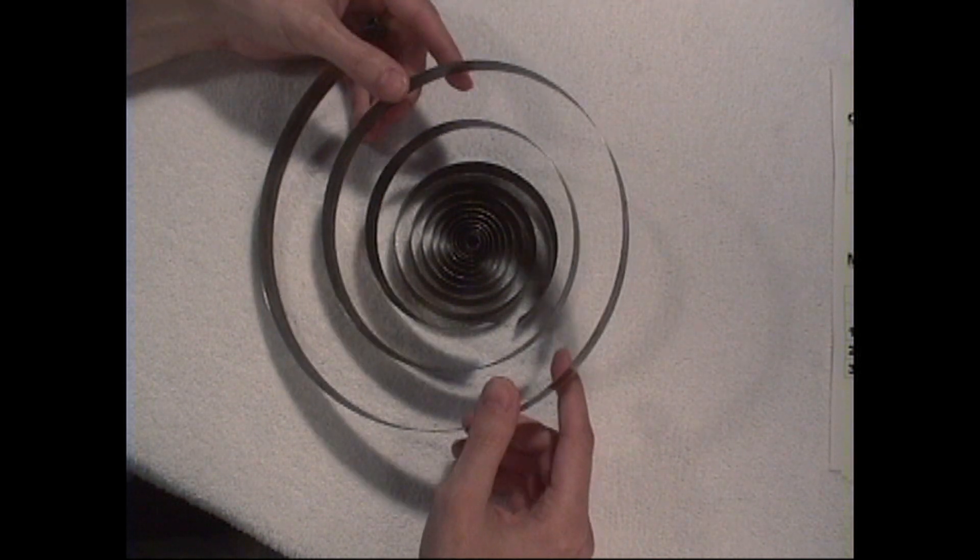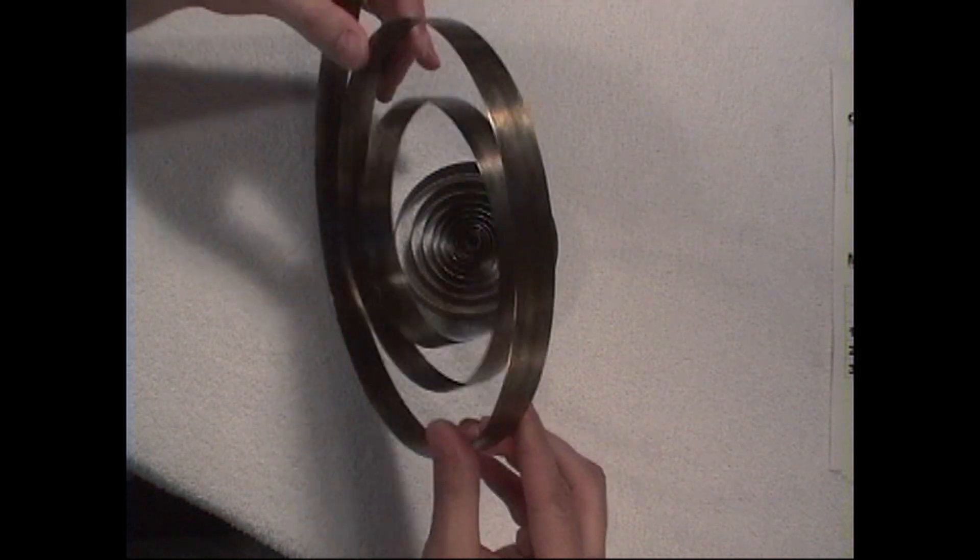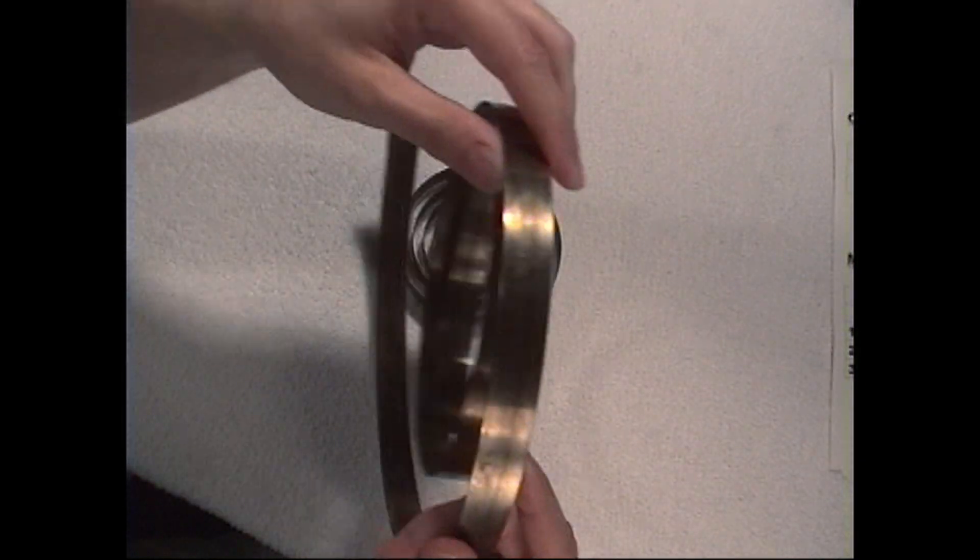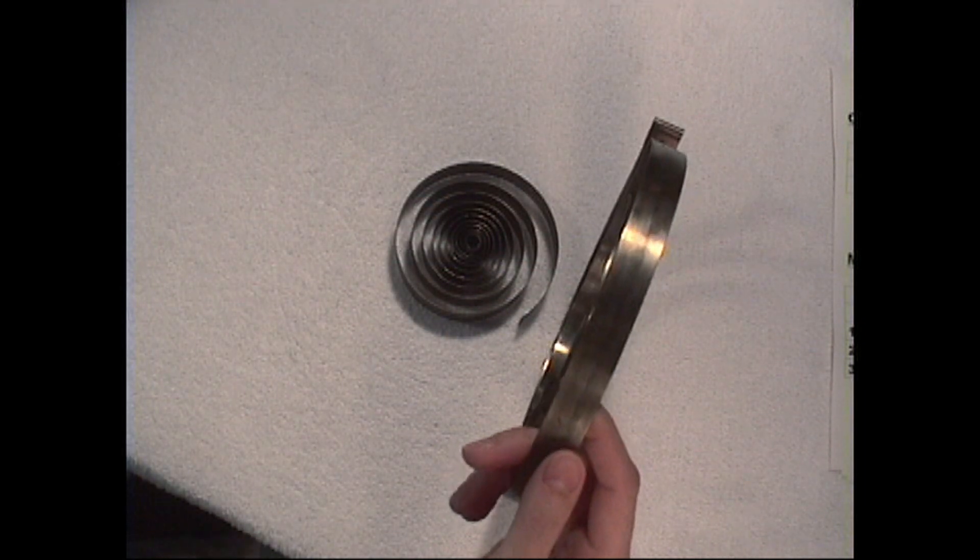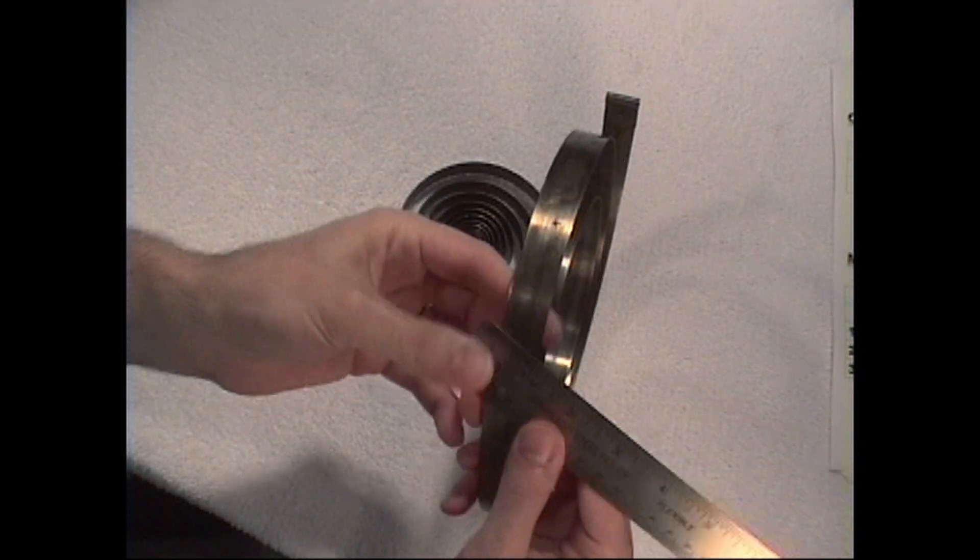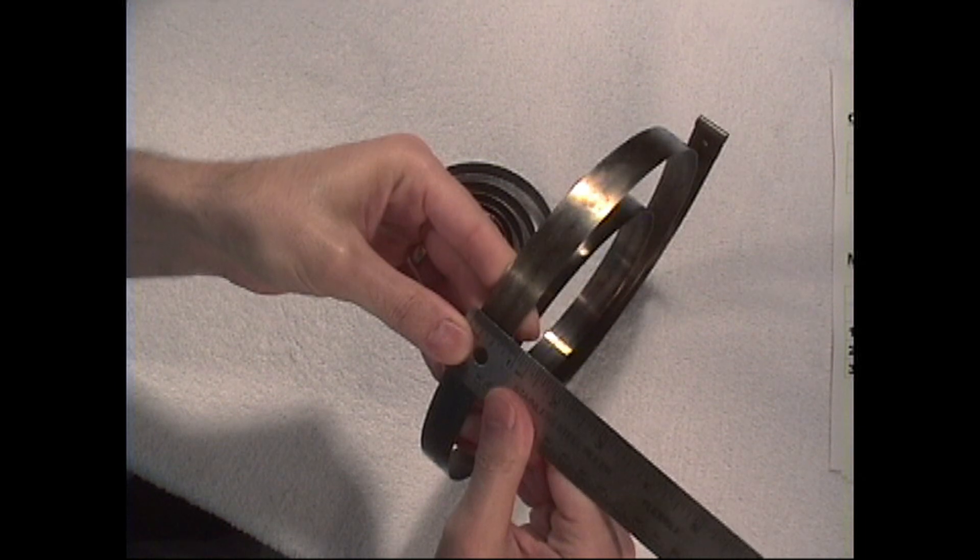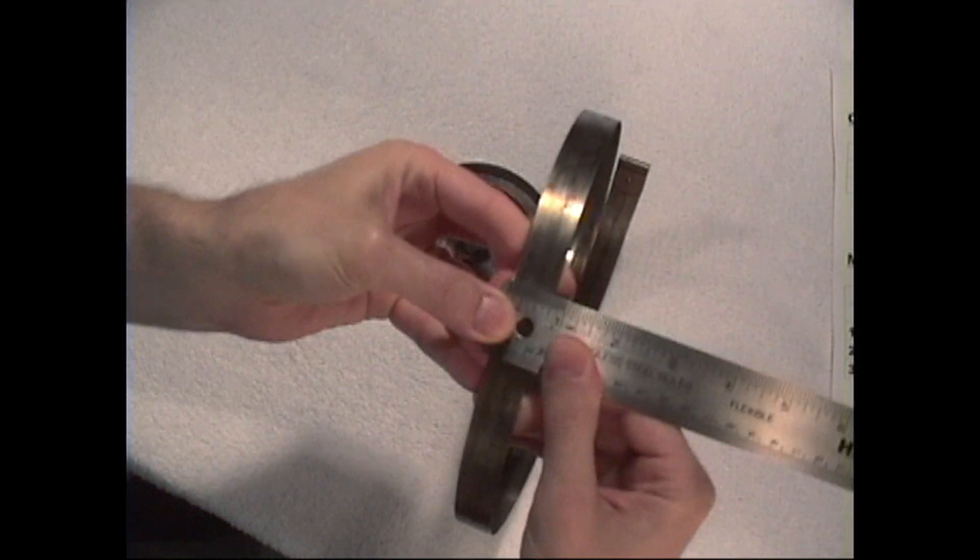The first thing that we're going to need to do is measure the width of the spring, because they do come in different widths. Like this one here I've already measured with the ruler, and it is three quarters of an inch. As we can see there, it's three quarters of an inch.